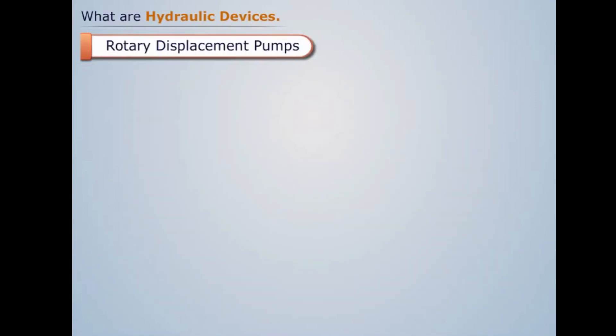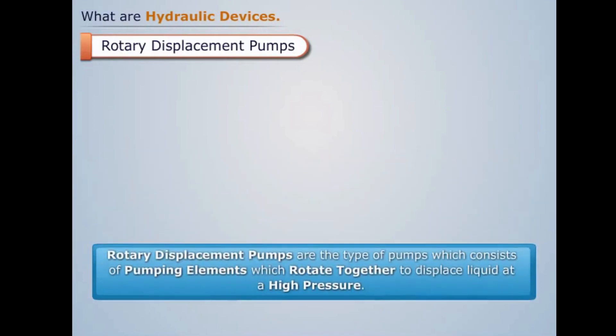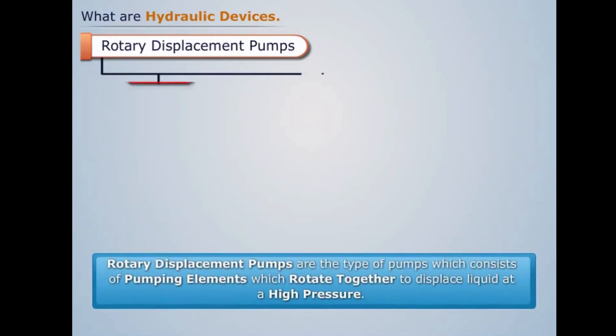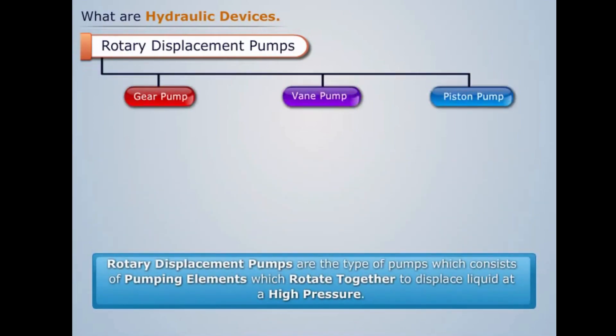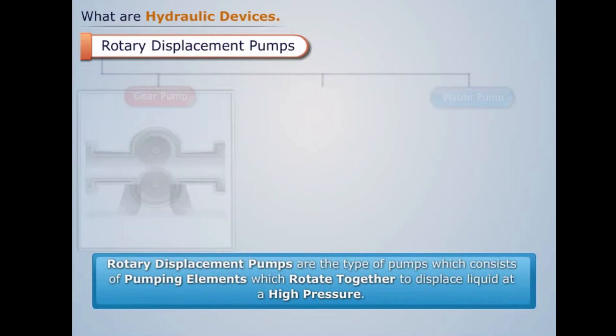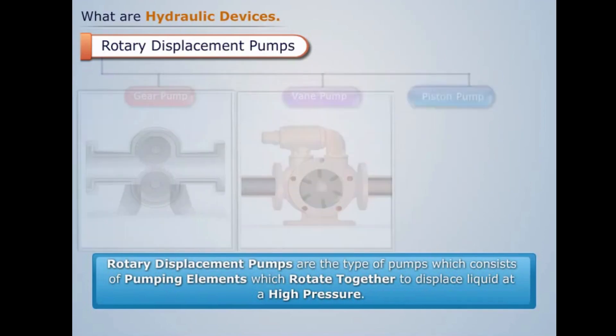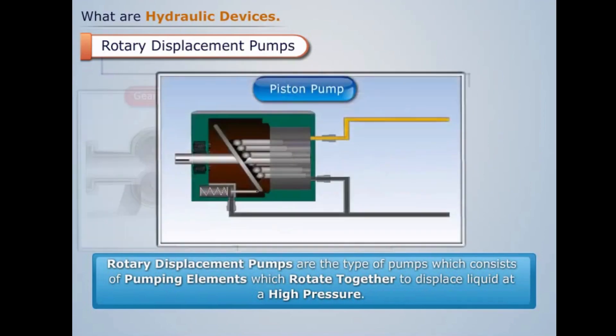Rotary displacement pumps are the type of pumps which consist of pumping elements that rotate together to displace liquid at a high pressure. The examples of rotary displacement pumps are gear pump, vane pump, and piston pump.